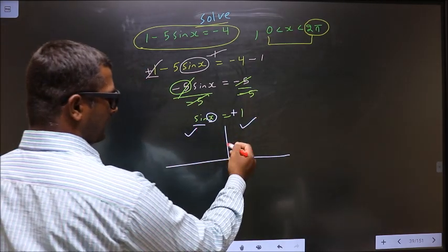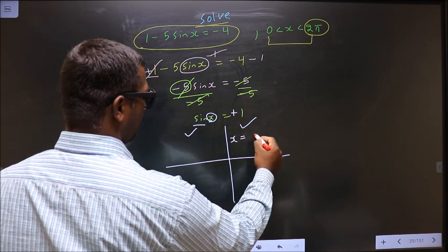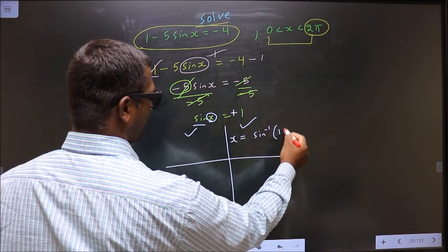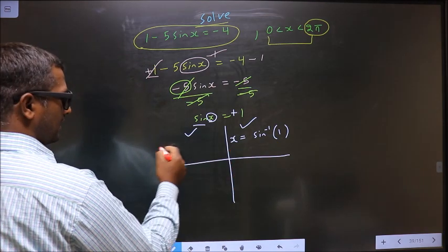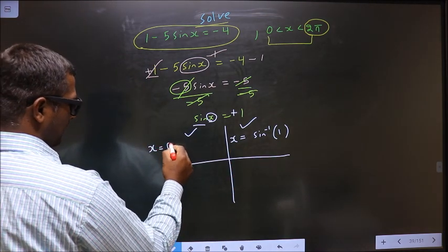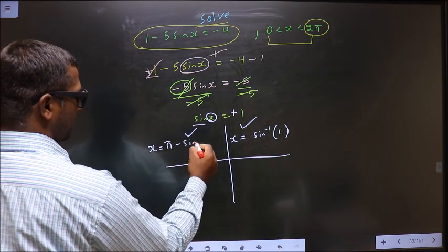To get an angle in the first quadrant, we do directly sin inverse of 1. To get an angle in the second quadrant, we should do π minus sin inverse 1.